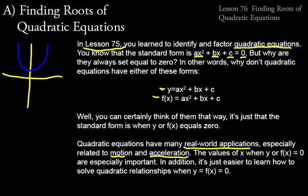It's also just easier to learn how to solve quadratic relationships when Y and F of X equals zero instead of some other value. So you have a new rule — the zero factor theorem — and a new definition: the root of a polynomial. Root means the same thing as zero, and we're going to be using those two words interchangeably.